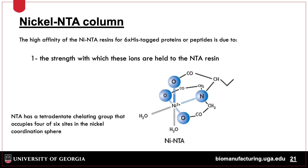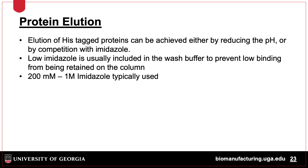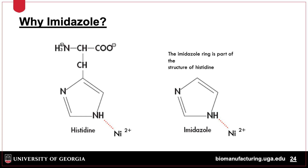IMAC resins have a nickel molecule bound to a nitriloacetate (NTA) molecule, which coordinates the metal on the resin. The His-tag protein will bind at this site. His-tag proteins have a strong affinity for the nickel-NTA and thus bind to the resin. In order to elute the bound protein, another chemical that competes for binding to the nickel is used — most commonly imidazole at concentrations of 200 to 1000 millimolar. Imidazole is used because it mimics the structure of histidine and thus can compete for binding to the nickel molecule.